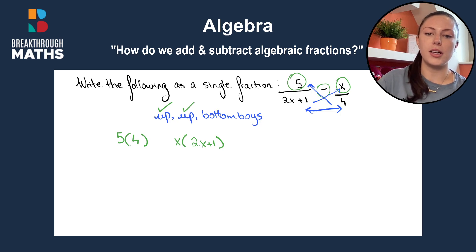Then we move on to the bottom boys. So we draw a line to put them on the bottom. So we have two x plus one is joined up to four, as we can see with our arrow in blue. So two x plus one was connected to four. So we multiply them. And that's our bottom boys done.